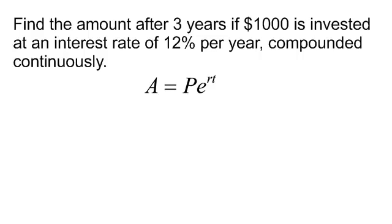Find the amount after three years if $1,000 is invested at an interest rate of 12% per year compounded continuously. I have my formula A = Pe^(rt), otherwise known as PERT.